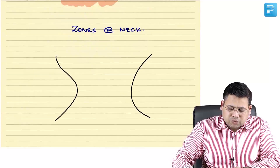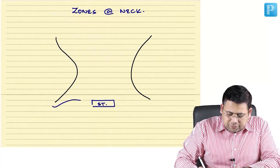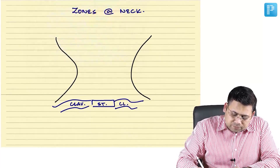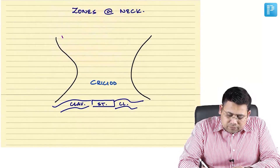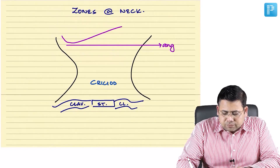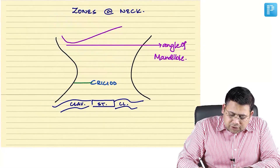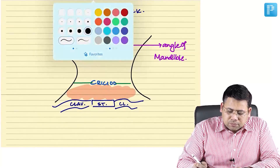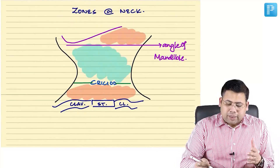There are three important zones of neck. At the level of sternum or clavicle, up to the cricoid, we have Zone 1. From the cricoid up to the angle of mandible, we have Zone 2. Above this is Zone 3.